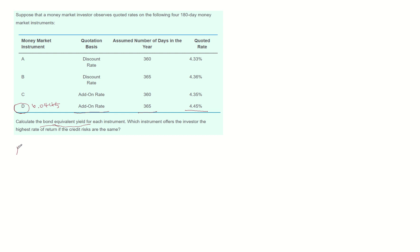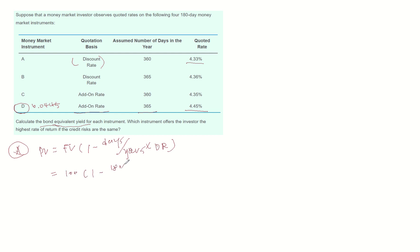Let's calculate option A. Option A's quote rate is provided based on discount rate, so from here we can calculate the present value of instrument A. Present value equals future value multiplied by 1 minus days divided by years multiplied by discount rate. So future value 100 minus 180 days divided by 360 multiplied by 0.0433. Then the present value of instrument A becomes 98.835.